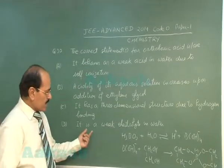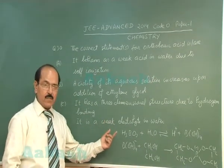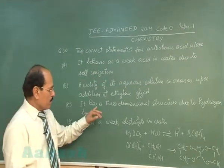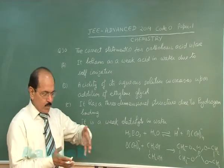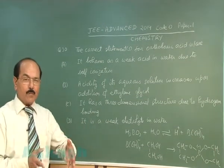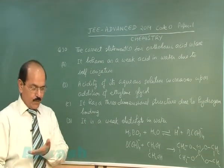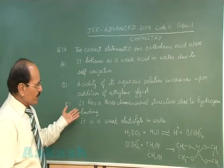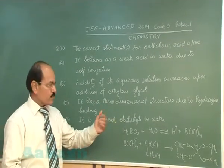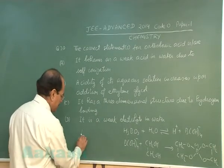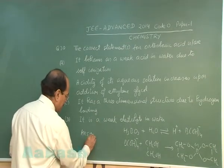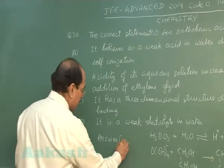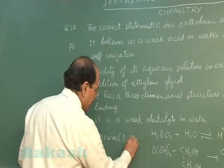Boric acid is a weak electrolyte in water — this statement is also true. Boric acid molecules are interlinked through intermolecular hydrogen bonding to form a layered structure; it does not form a three-dimensional structure. So the correct answer is option B and D.